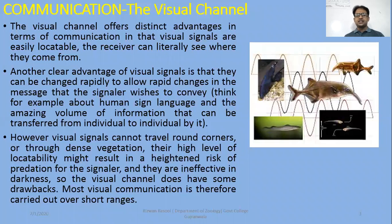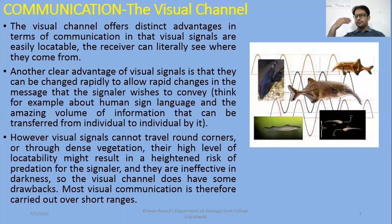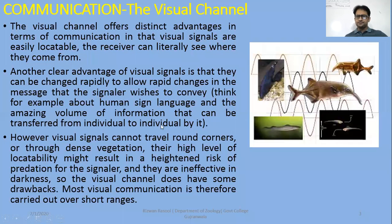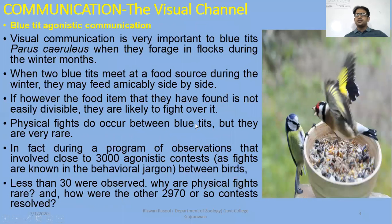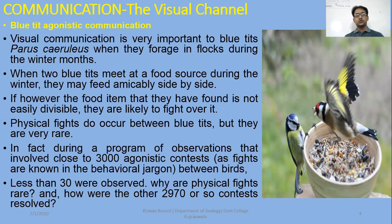However, there are some limitations. Visual signals cannot move around objects — if there are trees or rocks, they cannot pass across. There is also a specific limit for the organism on how far it can be seen. When visual stimuli are in darkness or in the dark, there are more useful stimuli or useful signals.